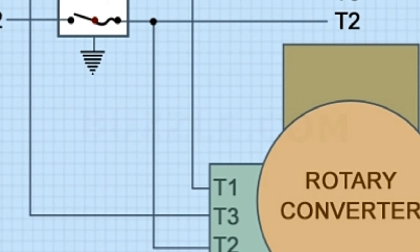Digital phase converters. It is the most modern type of machine and is completely electronic. Working: It uses a rectifier, an inverter, and a digital signal processor to produce a third voltage.